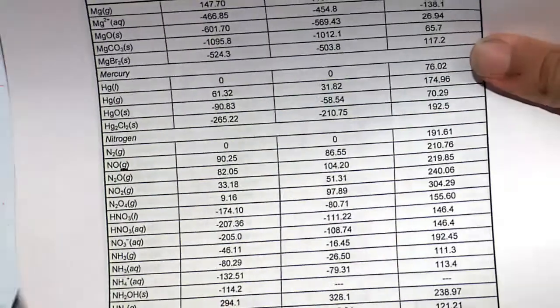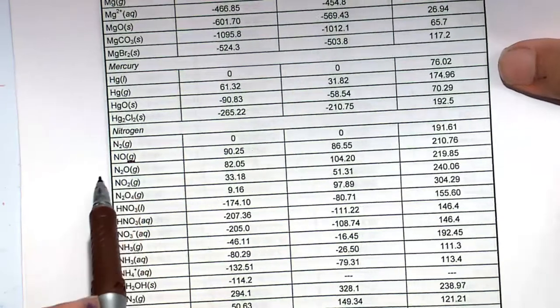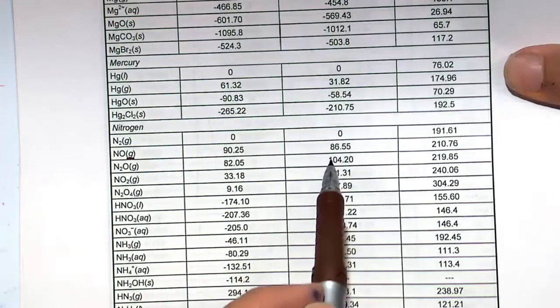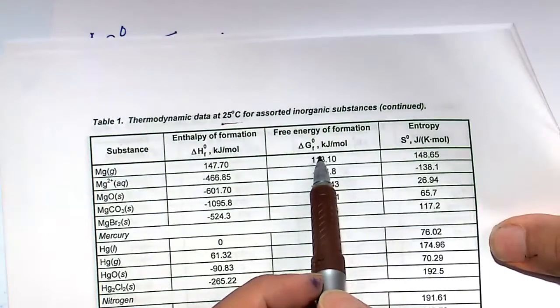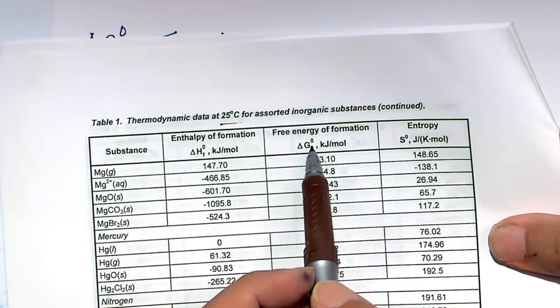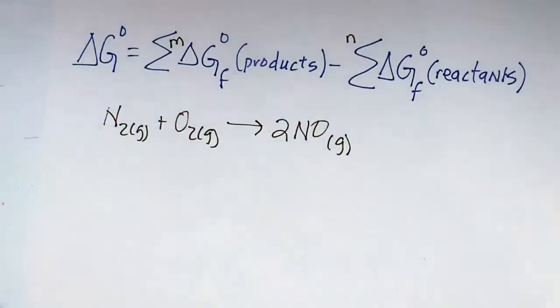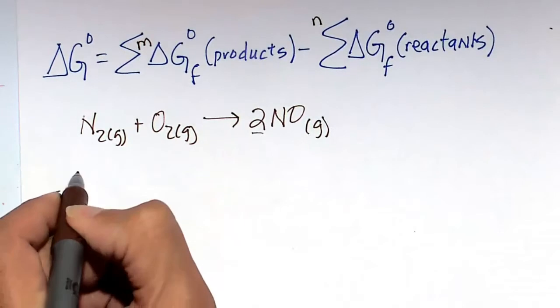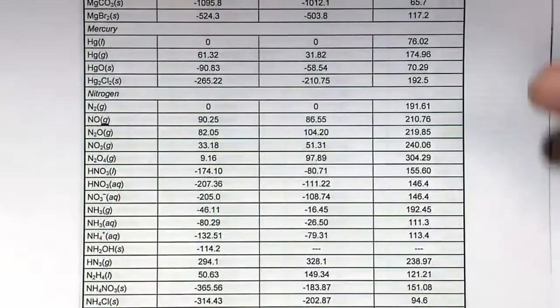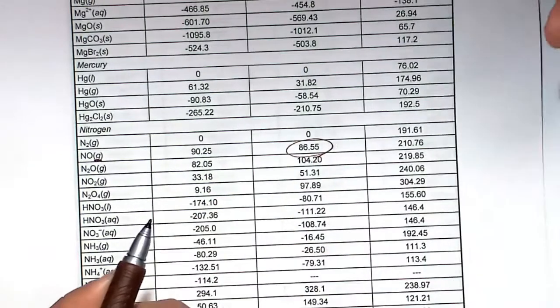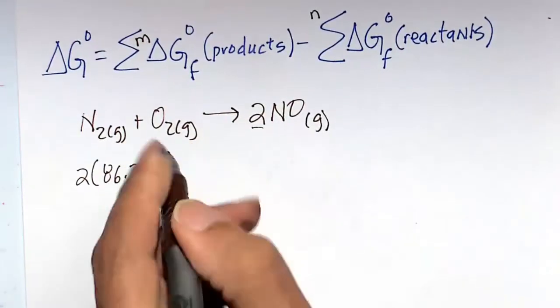Here we're looking at a gas, and we're looking at a gas here. We're going to take that number as 86.55 kilojoules per mole. That is our free energy of formation at delta G standard state conditions. Remember, that NOT means standard state. And it's going to be 2 times this, because the value we got here is for 1 mole, and we got 2 moles according to our balanced chemical equation.